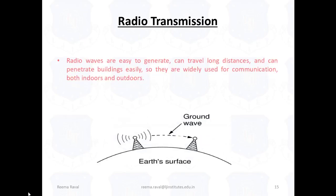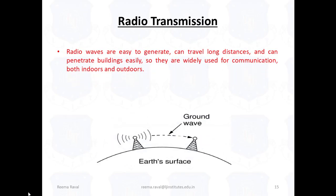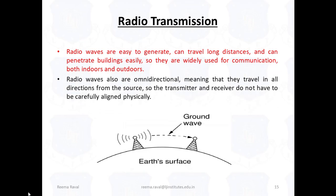Now, let us see the radio transmission. Radio waves are easy to generate. It can travel longer distances and also it can penetrate buildings easily. So, they are widely used for communication both indoors and outdoors. Radio waves also are omnidirectional. That means they travel in all directions from the source. So, the transmitter and receiver do not have to be carefully aligned physically.